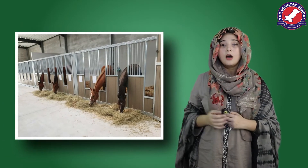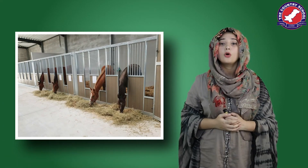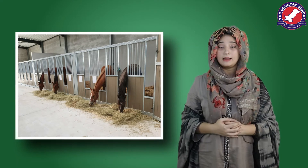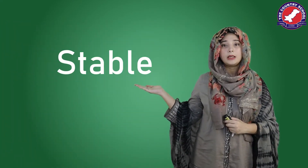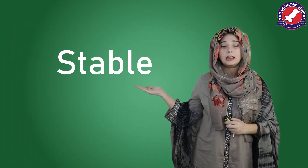This is a picture of a horse. A horse lives in a stable. Horse ke home ko hum stable kahte hain — s, t, a, b, l, e — stable.